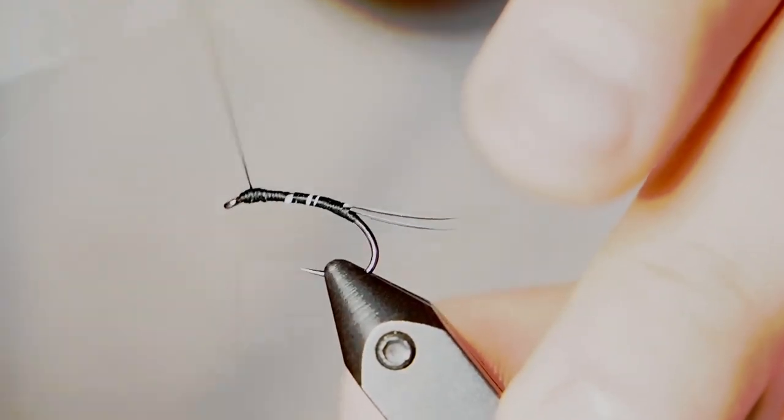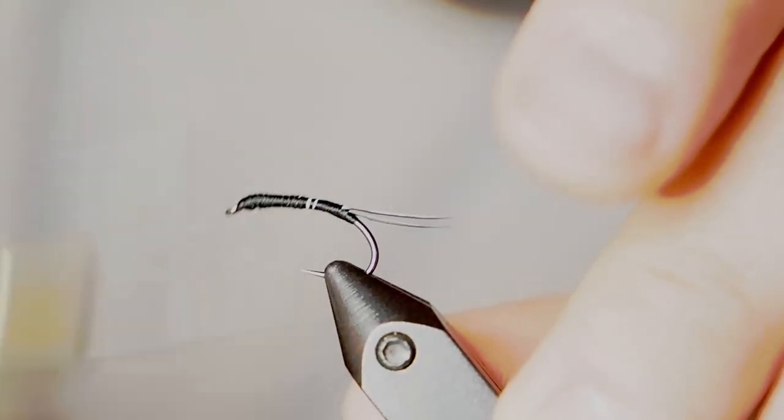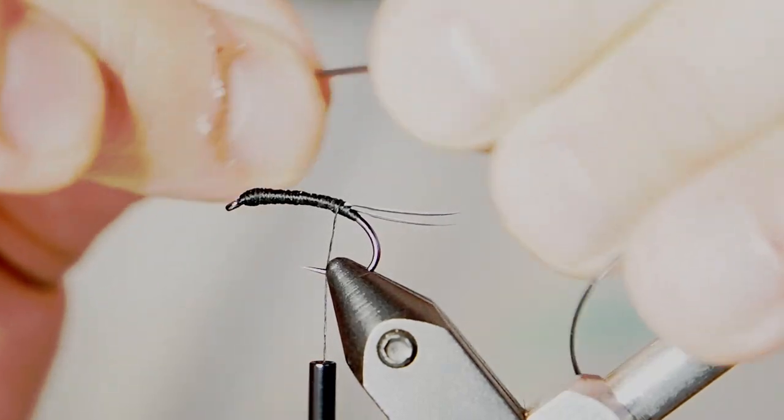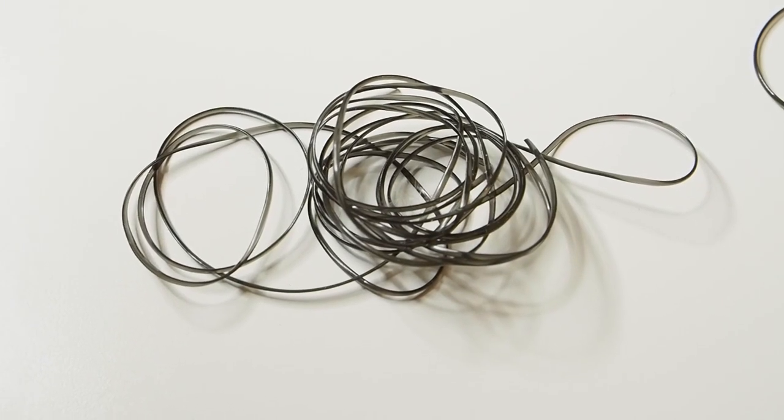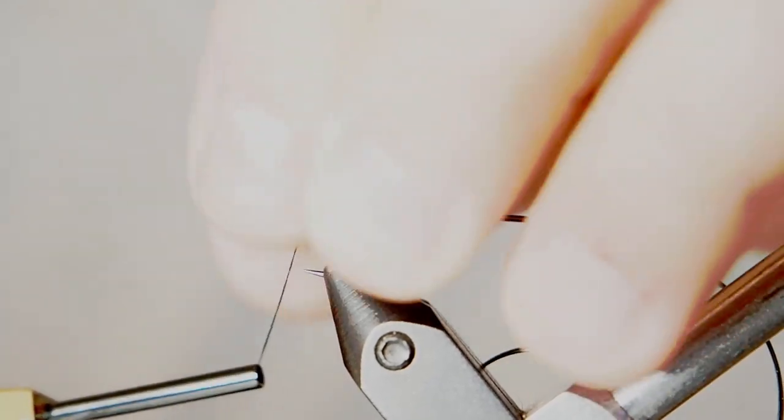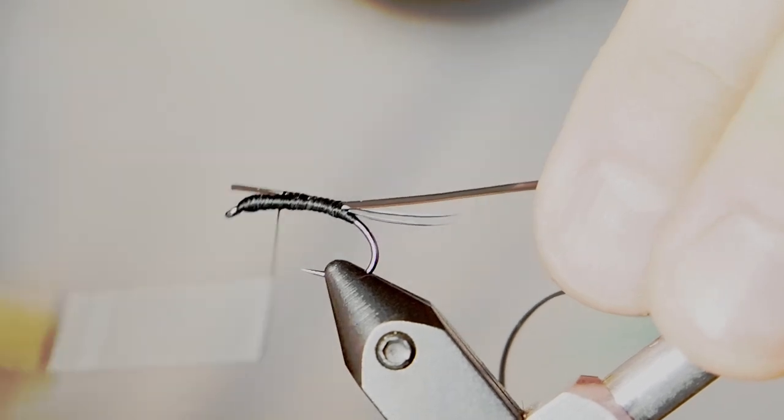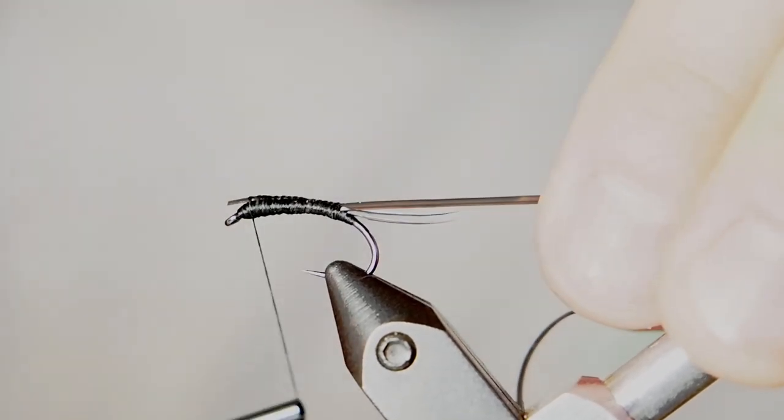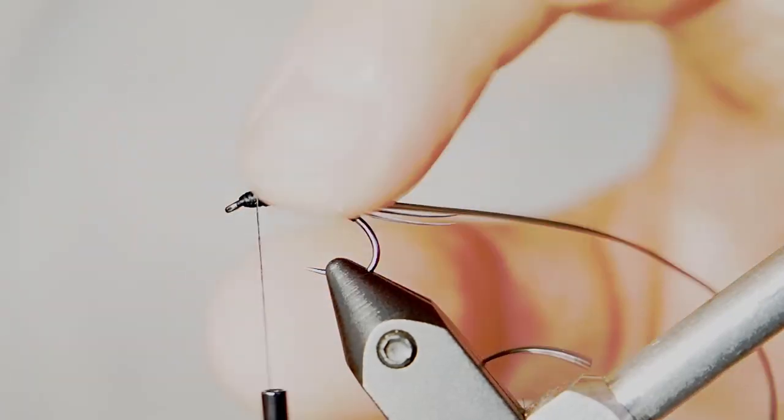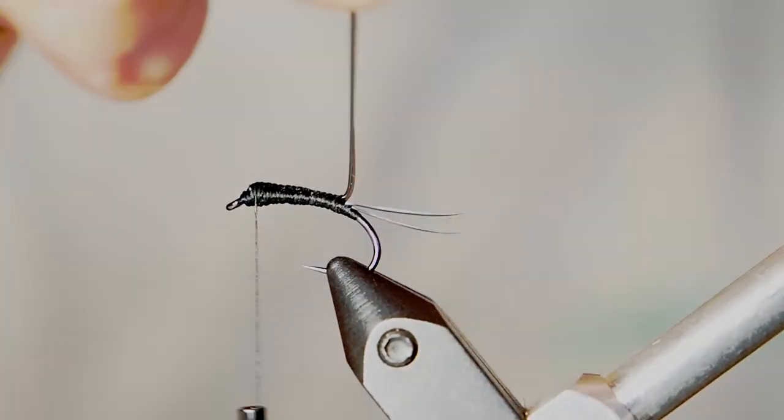Now, this is very important. I've brought the thread back to the head of the hook, but I'm actually going to build up some bulk. Flat wax nylon is good for this. You can build up a bit of a taper. Now, I'm going to take a very small black larva lace. I'm going to tie this in. It's actually got a flat side and a curved side. I'm putting the curved side down so that when I start wrapping, the curved side is actually up. I'm going to clip off the tip, but here you'll also be able to build up that taper.